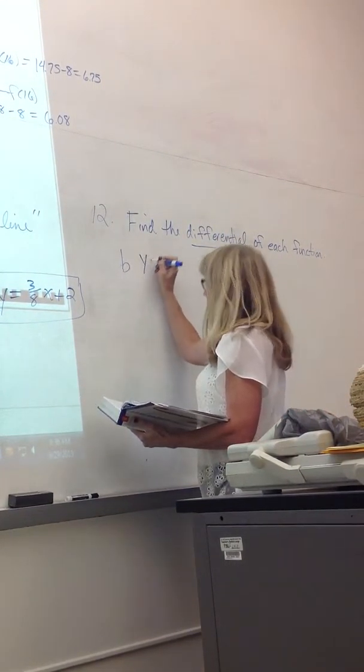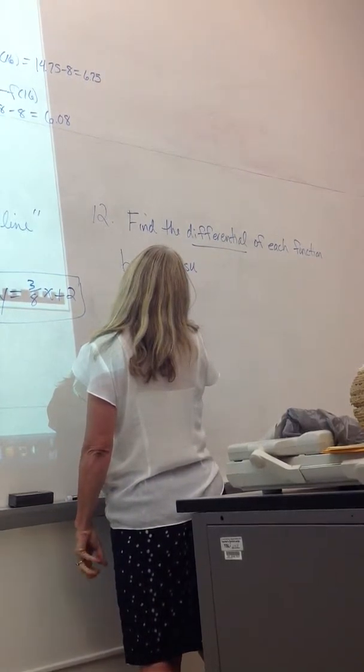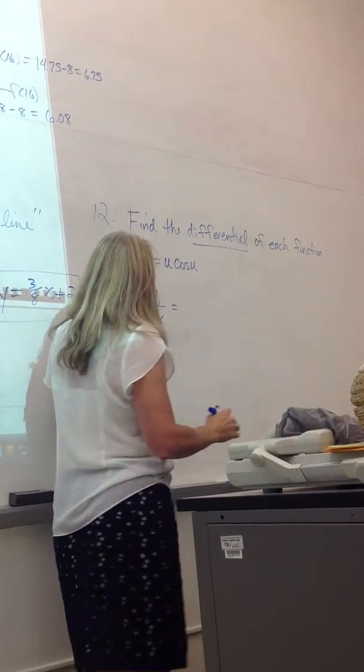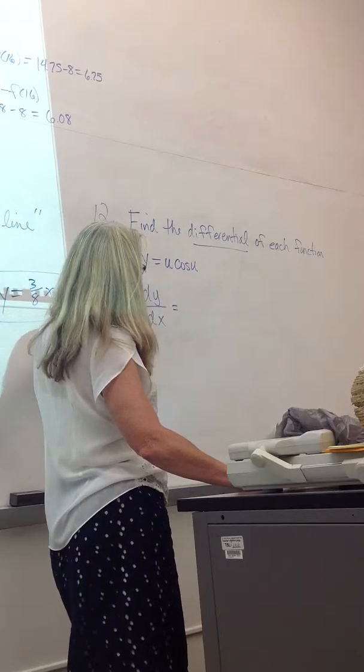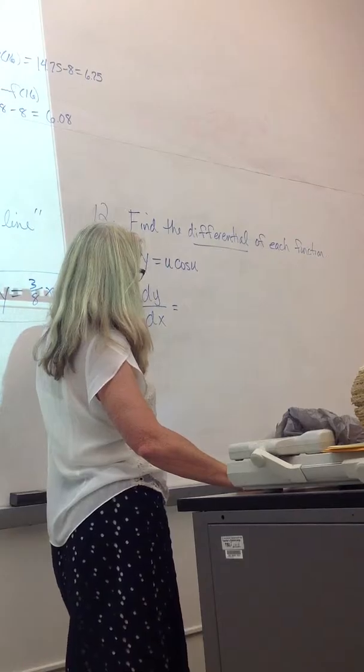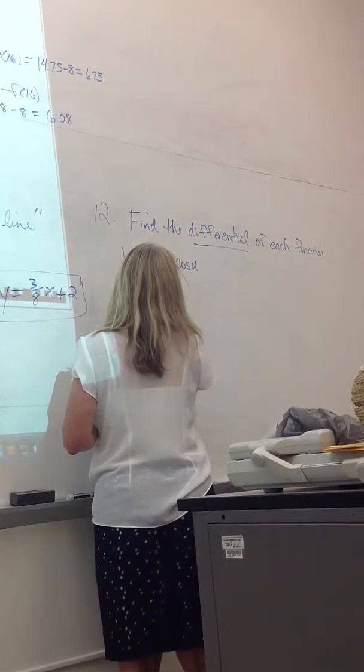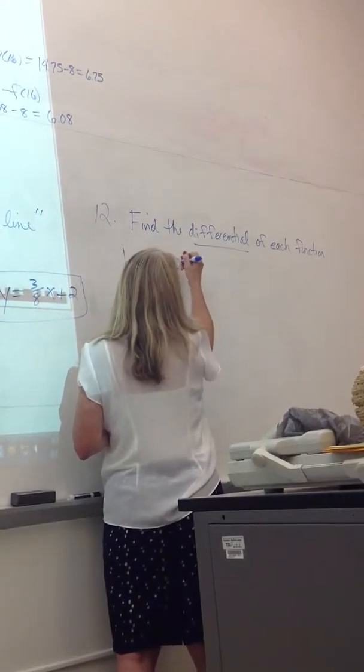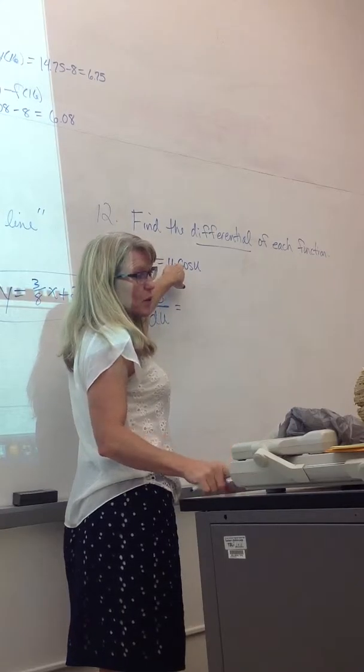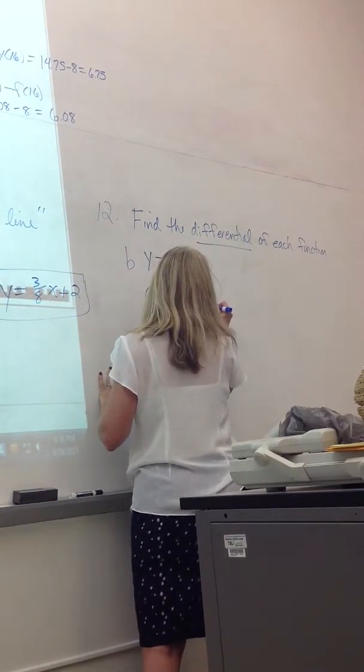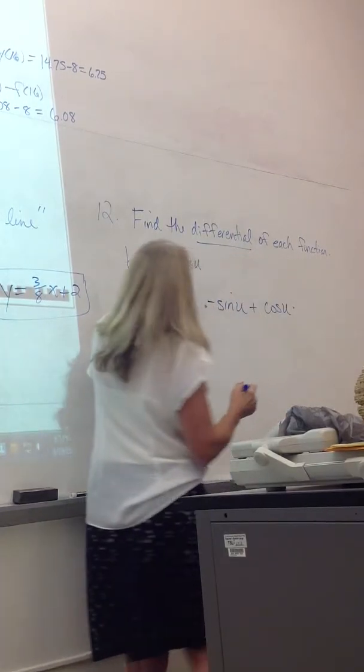So they gave us y equals u cosine u. When they're asking for the differential, they are asking for the derivative. For this particular example, focus on the derivative. We're going to not use the y prime notation, instead we're going to use this notation. But I guess my variable is u and not x. I'll change it to u. So to do this derivative, what's the first thing I need to notice? Why did I put that dot there? It's multiplication. So we're going to use the product rule. First times cosine's derivative is negative sine plus cosine left alone times the derivative of u will just be 1.